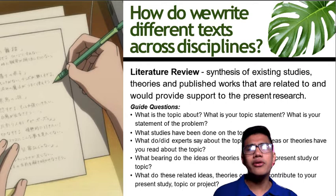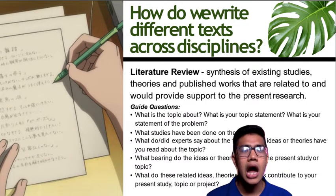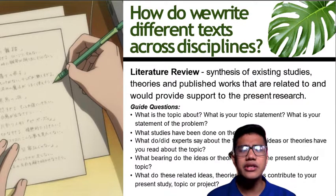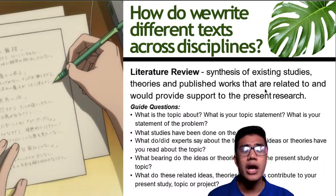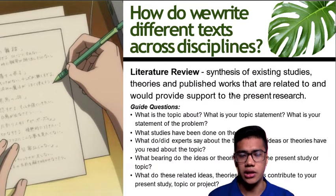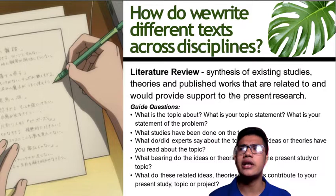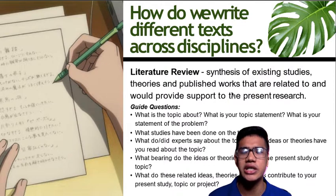Next is the literature review, which is very useful in your research. A literature review is a synthesis of existing studies, theories, and published works that are related to and provide support for your present research. This is what you do in your research proposals for Practical Research 1 — gathering and integrating all published works that may support your study. It is also called a review of related literature.